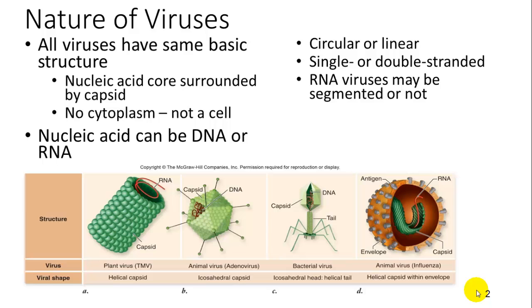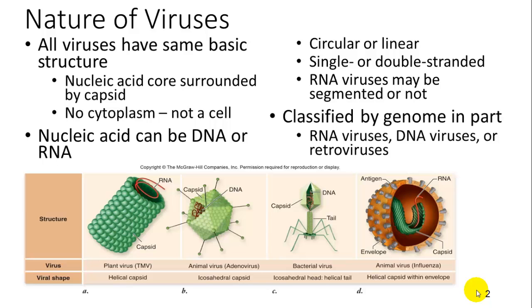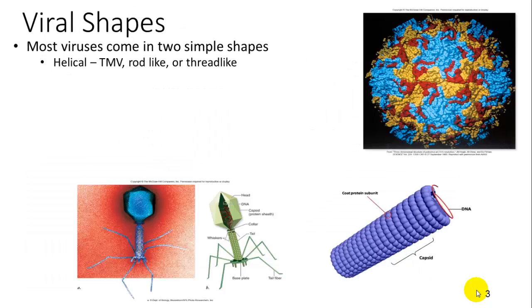The DNA or RNA also has some variability. It can be either circular or linear, single or double-stranded, and it may have segments or just be one complete nucleic acid strand. There are different ways to classify viruses — sometimes by their genome itself, but also by how they behave, such as whether or not they are retroviruses.